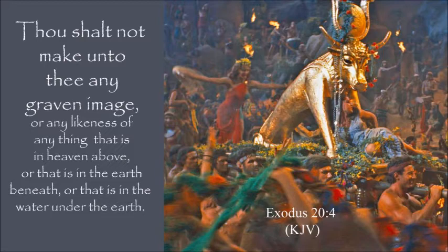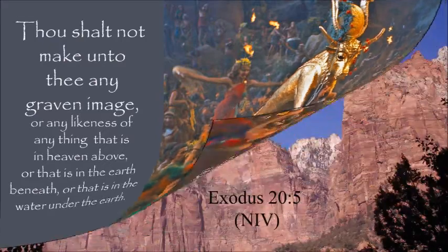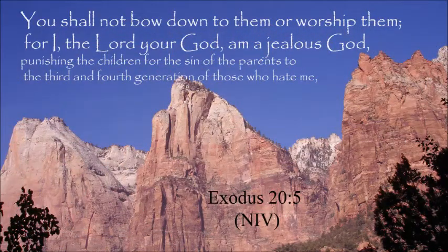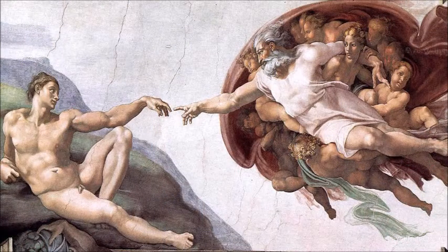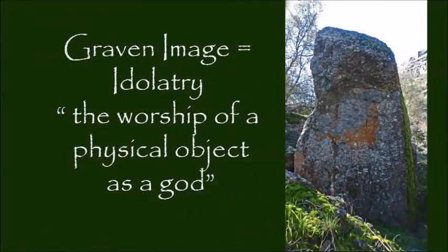The second commandment says that no graven images shall be made. It does not say that no images shall be created. Since God points out that he is a jealous God, this suggests that he may want attention focused upon himself. Logically, if an image helps focus attention and worship on the supreme God, then this is good. However, if an image or object is worshipped because it is seen as possessing powers in its own right, or is a representation of a false god, then this is what the commandment means when it uses the term graven image.